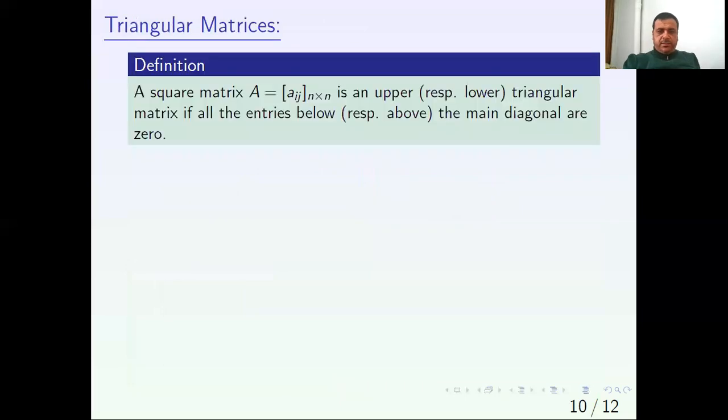Triangular matrices. A square matrix A equals Aij of order n is an upper triangular matrix if all the entries below the main diagonal are 0. We call it upper triangular matrix if it is a square matrix and all elements below the main diagonal are 0. Conversely, between parentheses, a lower triangular matrix has all elements above the main diagonal equal to 0.